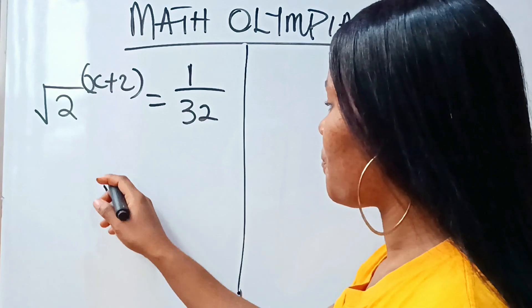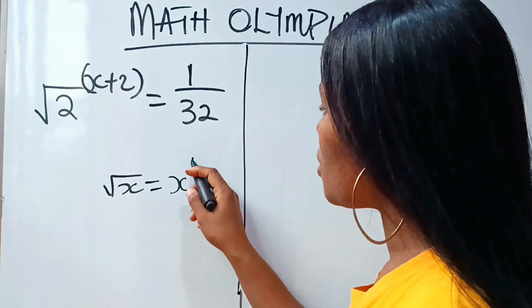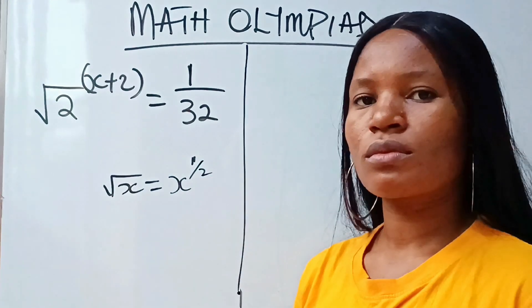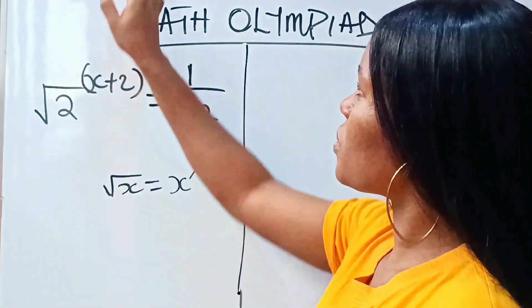Now, we all know that square root of x is seen as x to the power of 1 over 2, right? Yes. So let's do that here. Let's remove the square root sign.